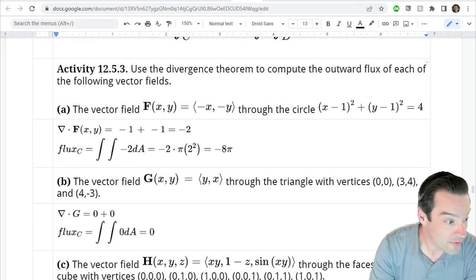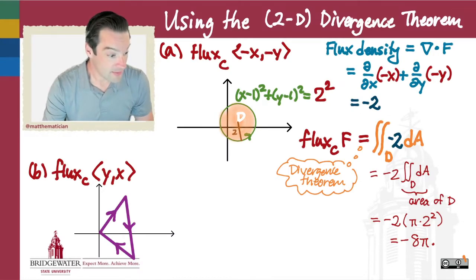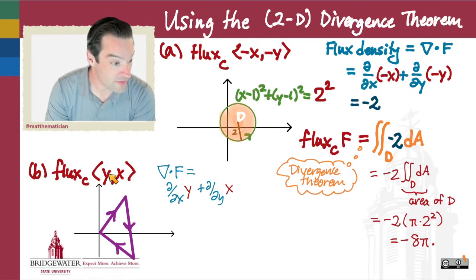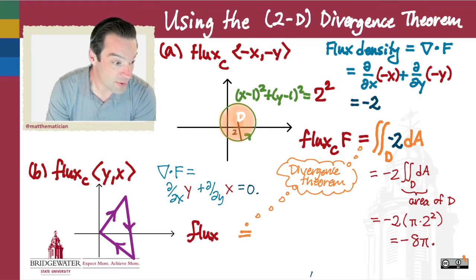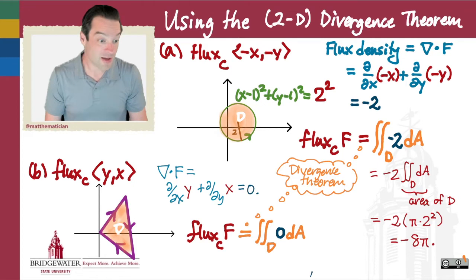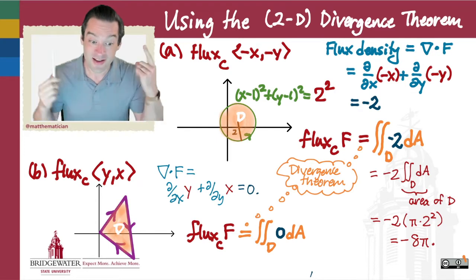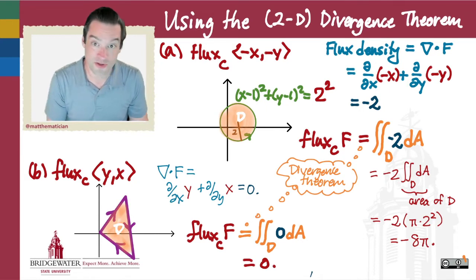Same strategy: since we have a closed curve, we first check the flux density. The divergence is the x partial of the x component y, which is 0, added to the y partial of the y component x, which is also 0. So the flux density is 0 everywhere. According to the divergence theorem, the flux is the double integral of 0 over the triangular region, which equals 0 times the area — just 0.